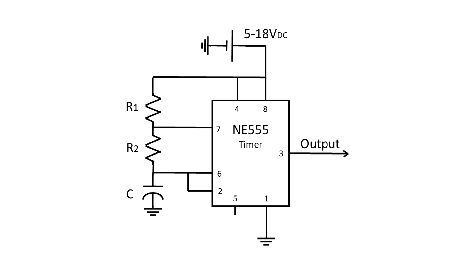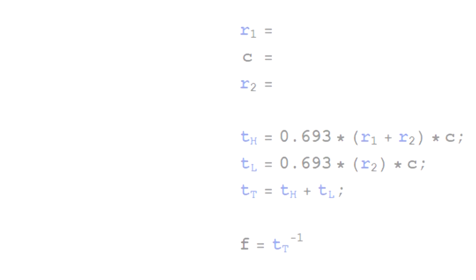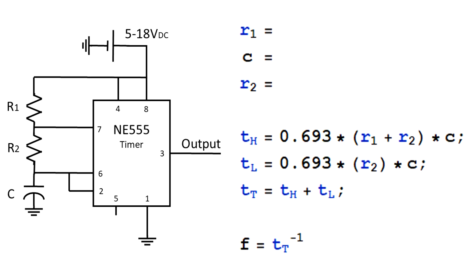The set frequency, which can range from microseconds to hours, is determined by two resistors and a capacitor. Right next to the astable timing schematic in the datasheet should be equations that dictate the period and frequency of the circuit. Remember that frequency is 1 over the wave period, and 1 period is the time spent on plus the time spent off. Resistor 1 is going to change the duty cycle — the percentage of time spent high instead of low — so to keep the duty cycle close to one half of the period, this value should be very low.